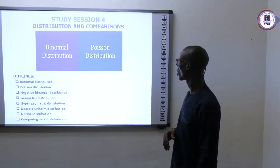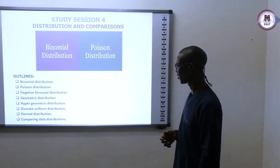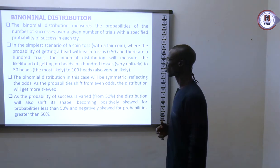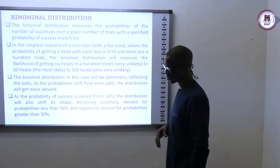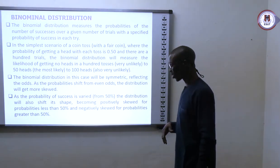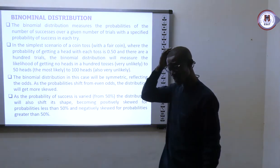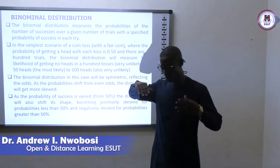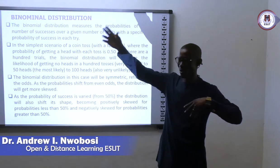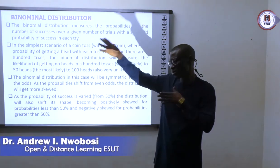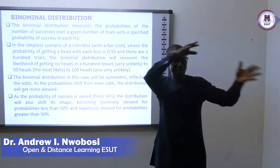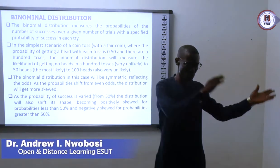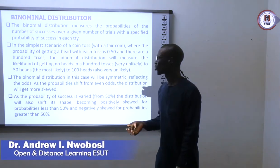Let us look at the distribution and comparison of data, or variable distribution. We will start with binomial distribution. What is distribution? In statistics, we have different statistical distributions. Statistical distribution tries to tell the randomness of a variable — how does this variable stochastically move over the year, and how does it distribute over the year? So we have different types of distribution.